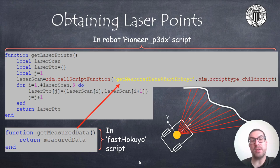But since they are in separate code snippets, we must use the callScriptFunction from the CoppelaSim API to get such information. The getLaserPoints function will actually return a list with x and y coordinates of each of the points returned by the laser sensor.